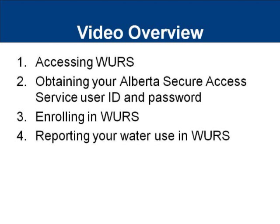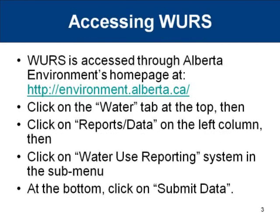The content of this video is also available in a PDF document to help you. To begin, users will require a personal computer with internet access and the documentation supplied to you from Alberta Environment or your license administrator. This documentation should contain a PIN number and a temporary enrollment ID. The temporary enrollment ID may also be referred to as the license group number.